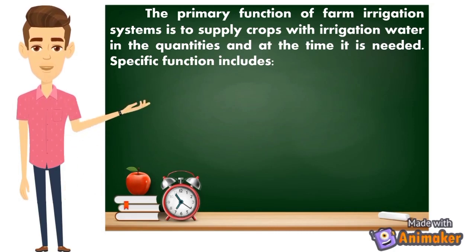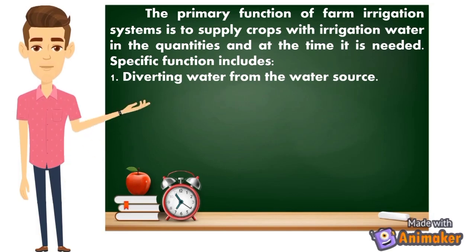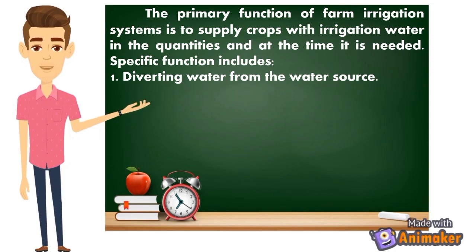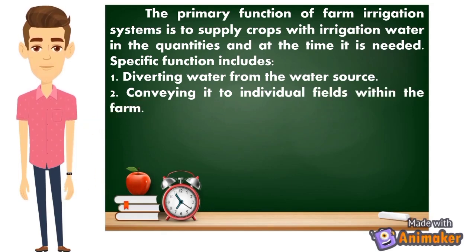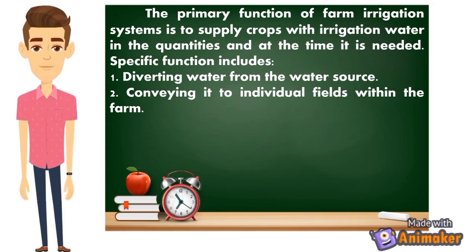Specific functions include: first, diverting water from the water source — ibig sabihin, kumukuha tayo ng tubig from the water source in order to irrigate our plants, so yun yung tinatawag nating pagpapatubig. Pangalawa, conveying it to the individual fields within the farm, wherein sa surface irrigation, hatihati — katulad na lang sa rice fields — we can convey water to each individual field.